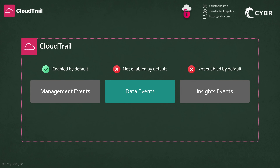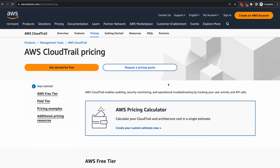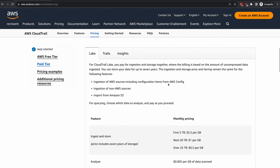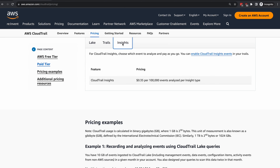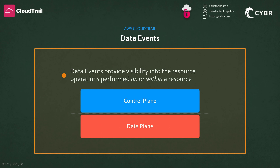Data events, on the other hand, are not enabled by default. Unless you go into the CloudTrail service and configure it to specifically log them, then CloudTrail will completely ignore this data. The reason for this is that AWS charges more for logging this type of data. Data events provide visibility into the resource operations that are performed on or within a resource, which is referred to as data plane operations.